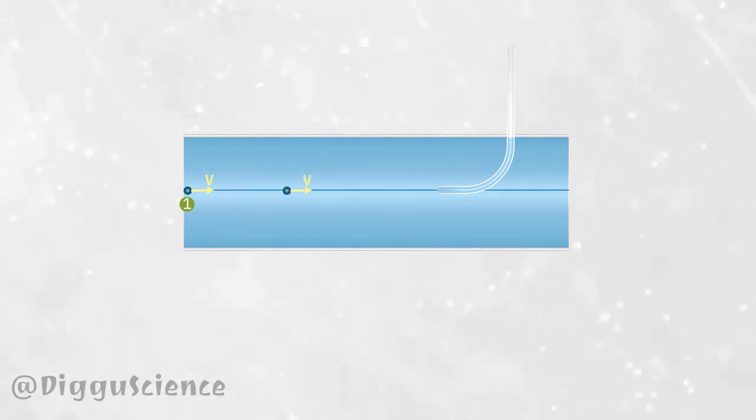These fluid particles will flow through the streamline until they reach the small hole. There, the movement of the particles will be slowed down until they stop moving. At the same time, the water level in the vertical pipe increases by a distance h measured from the streamline.